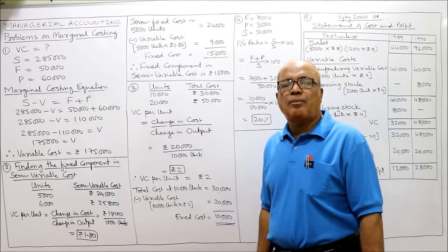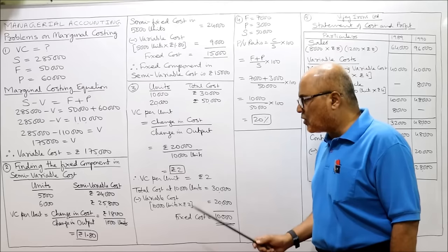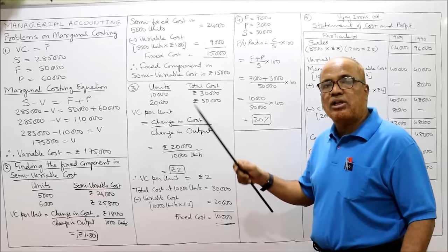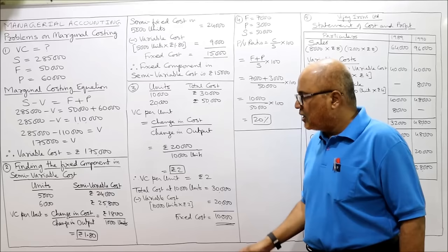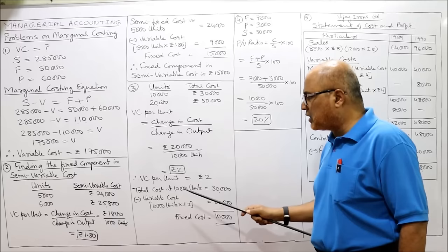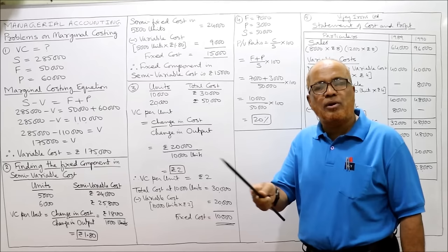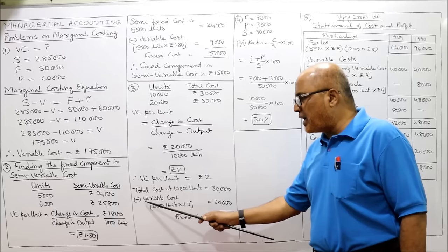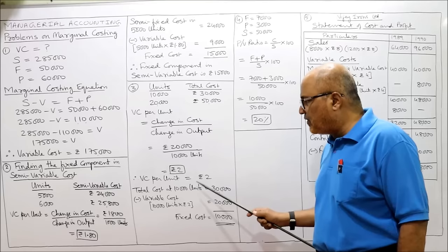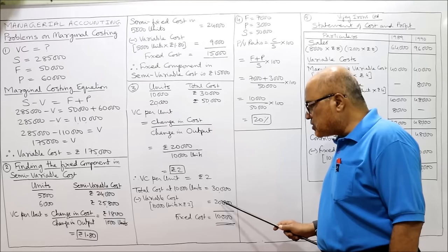For practice, we also find the fixed component. Total cost at 10,000 units = 30,000. Variable cost for 10,000 units = 10,000 × 2 = 20,000. Fixed cost = total cost minus variable cost = 30,000 minus 20,000 = 10,000 rupees. Three problems completed.